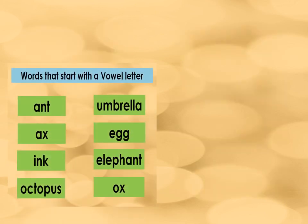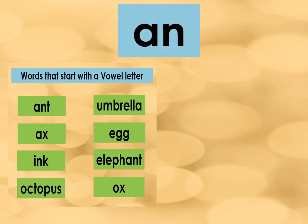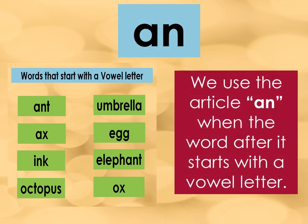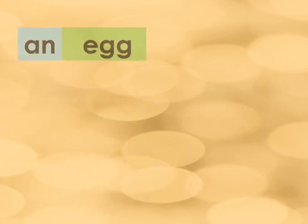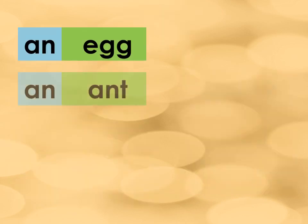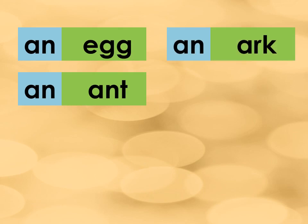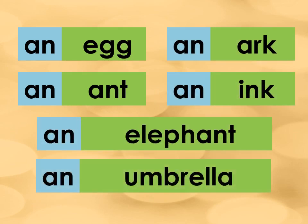Now, what if the words start with a vowel letter? What article should we use? We use the article AN. We use the article AN when the word after it starts with a vowel letter. Examples: an egg, an ant, an ark, an ink, an elephant, an umbrella.